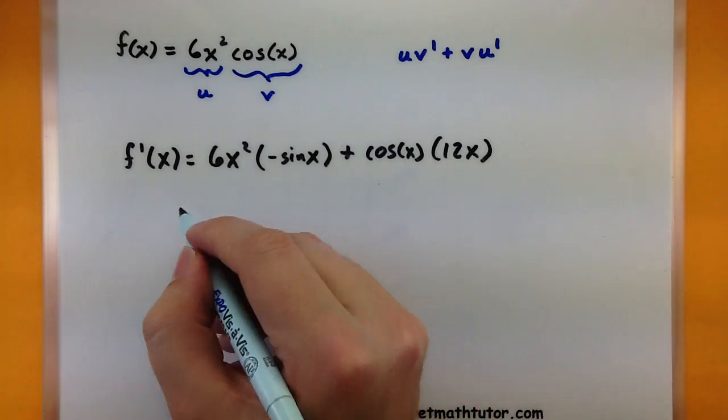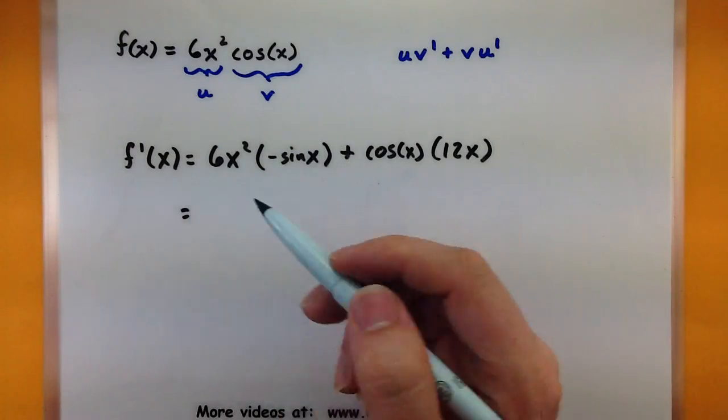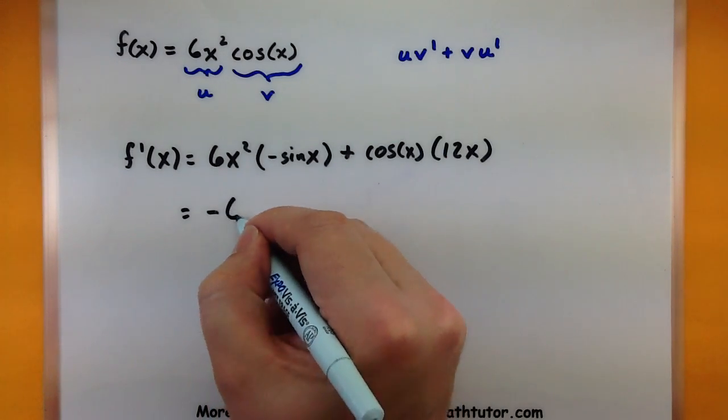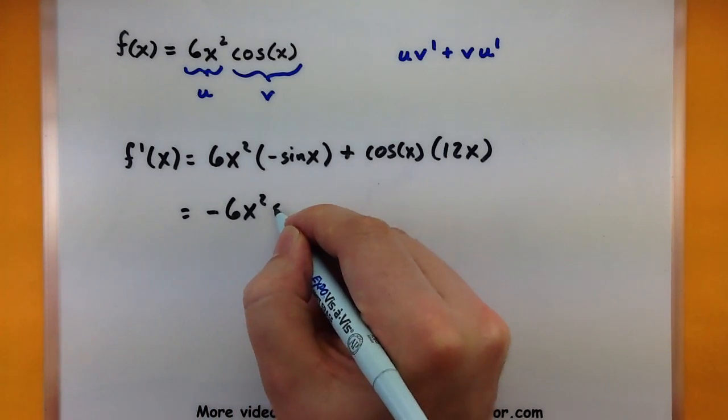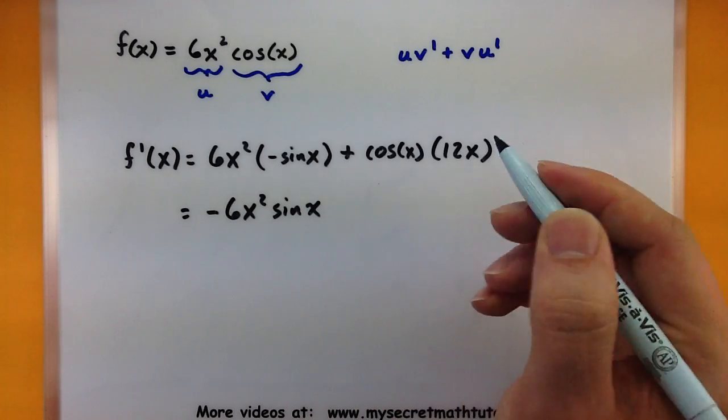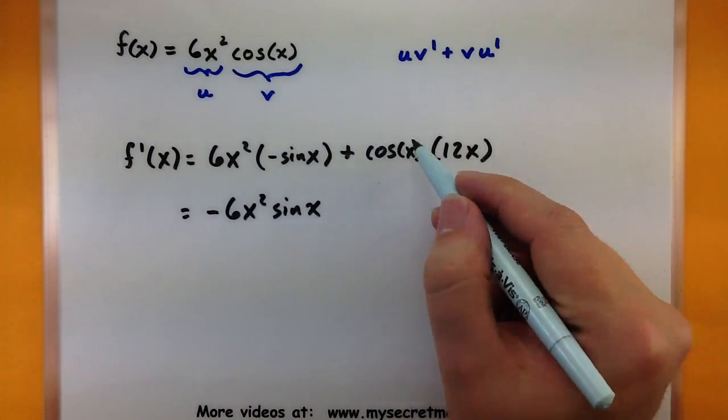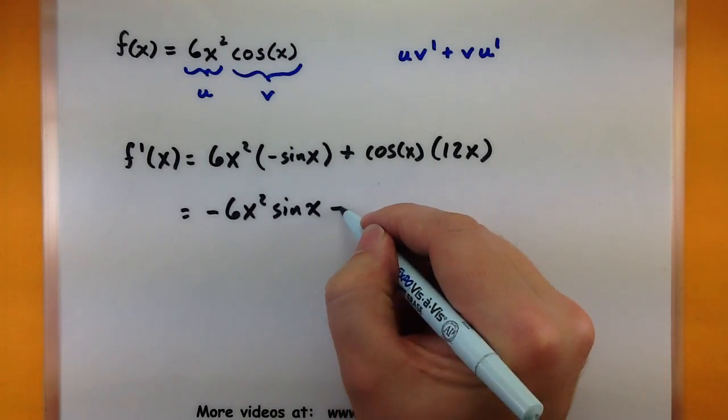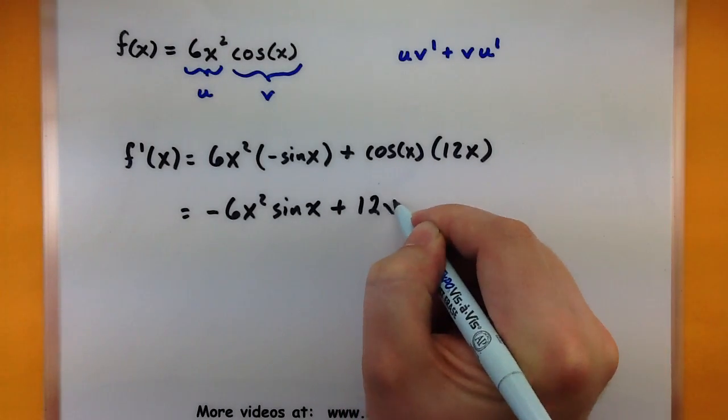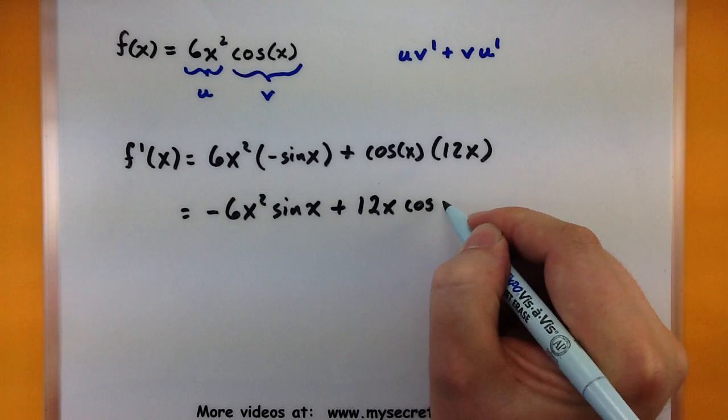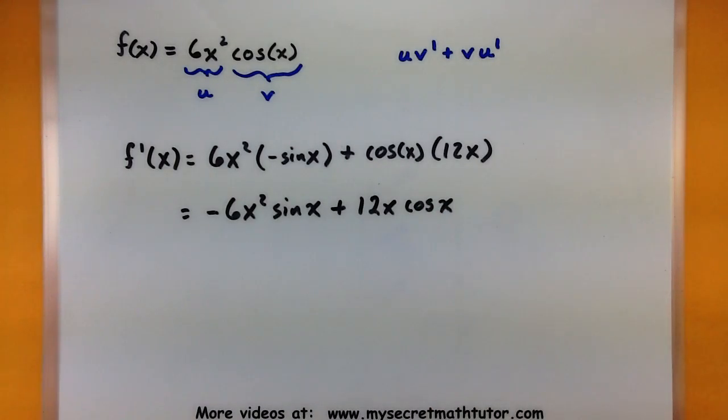Plus now my second function cosine of x multiplied by the derivative of the first function 12x. Okay and just to clean this up a little bit we would probably move our negative signs all the way out front. So negative 6x squared sine of x and maybe write our other function out front so no one thinks it's in the argument. So plus 12x cosine of x. And now that one's done.